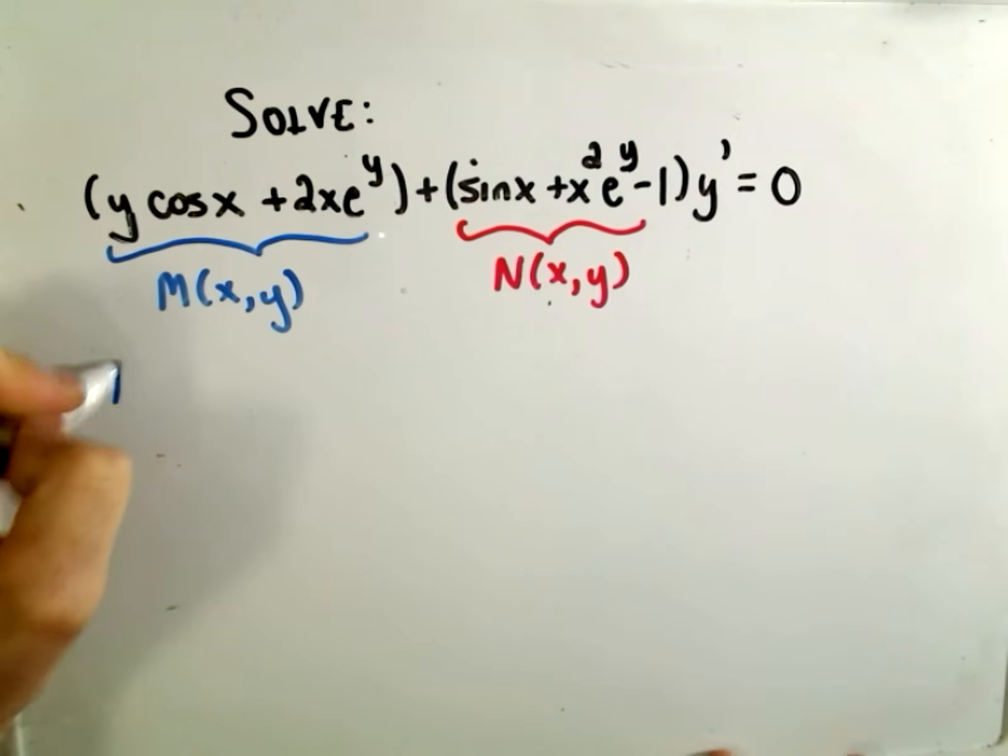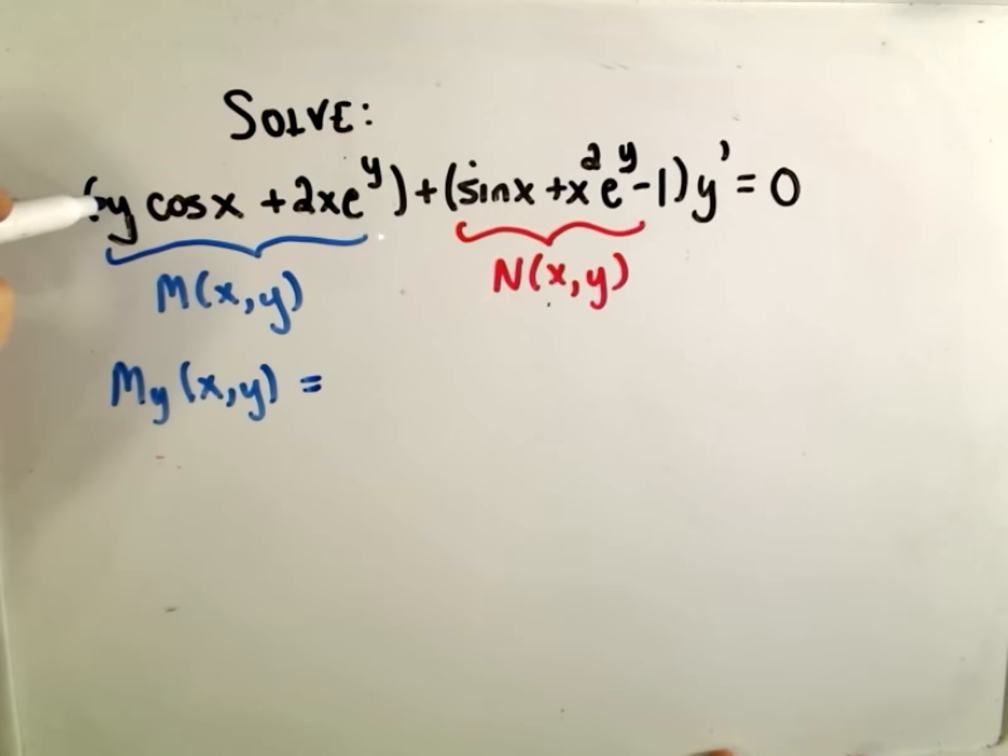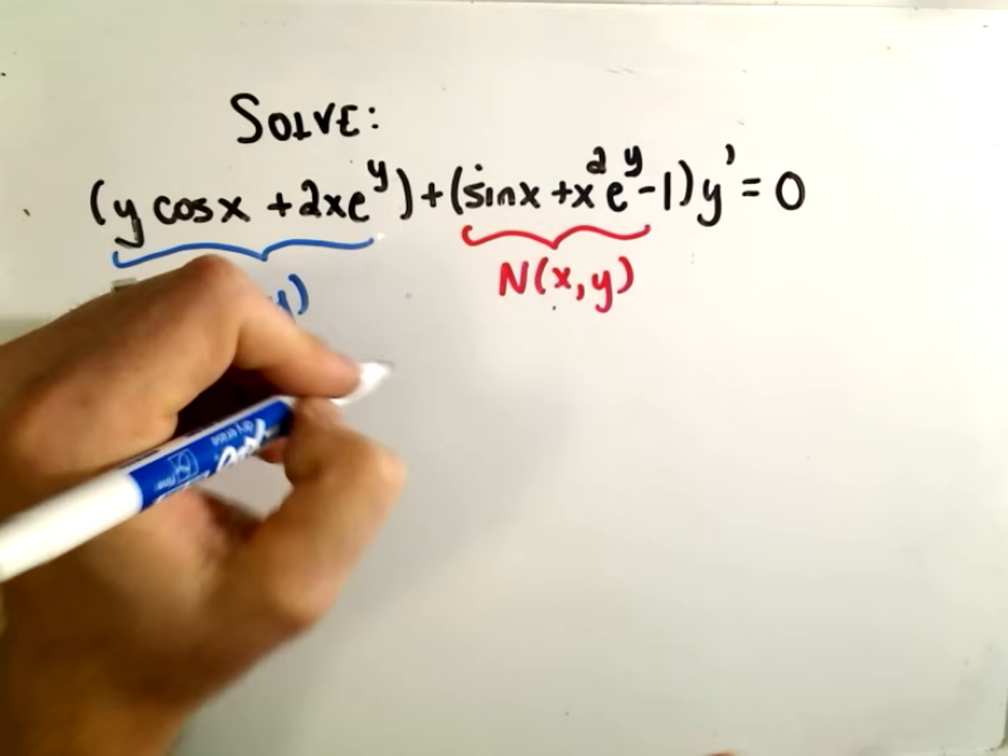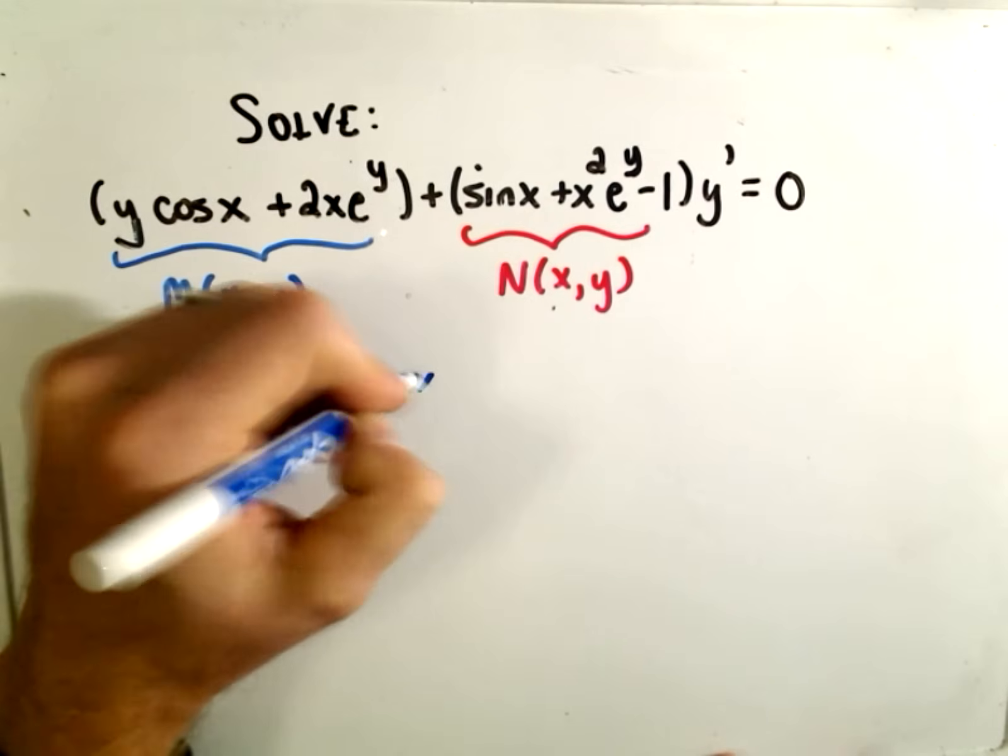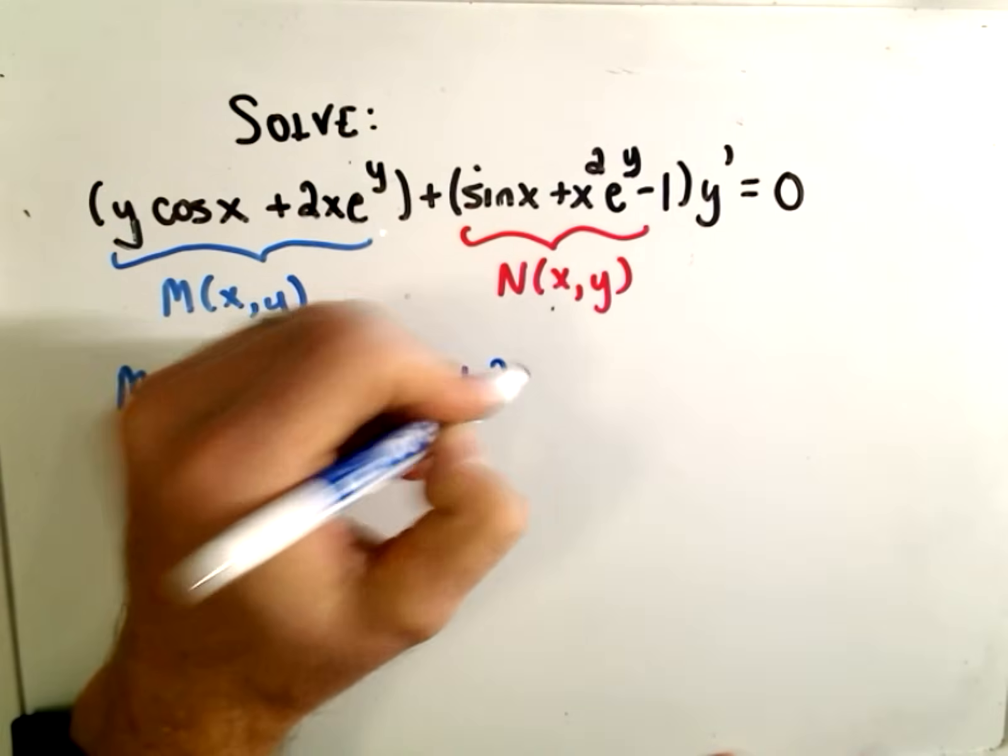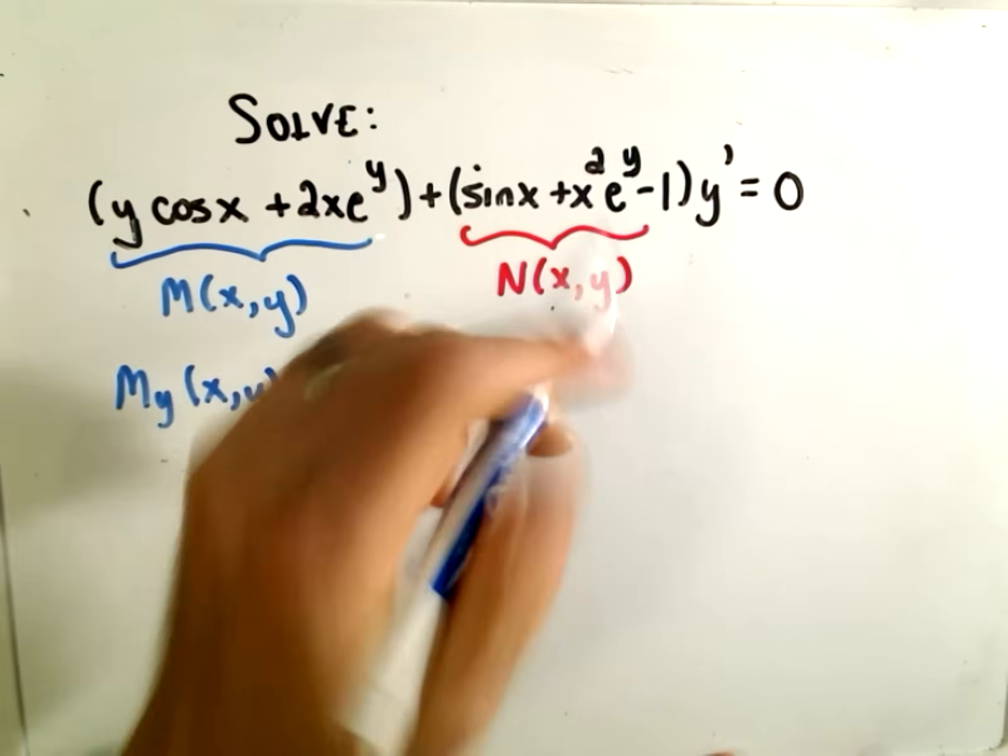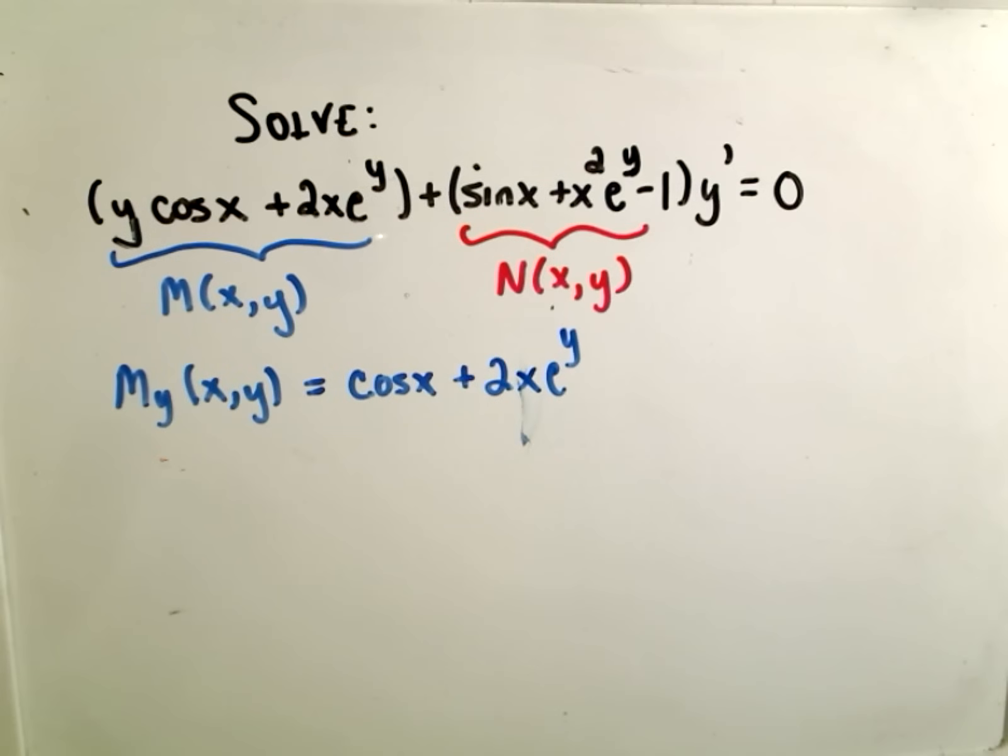So it says we take the partial derivative of M with respect to y, so we'll treat x like a constant. So the derivative of y cosine x would simply be cosine x. The derivative of 2x e to the y will just be 2x e to the y. Because again, we're taking the derivative with respect to y.